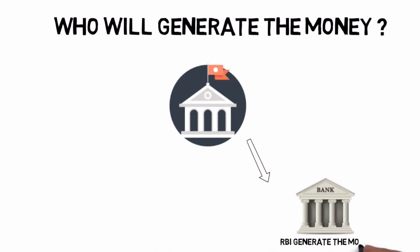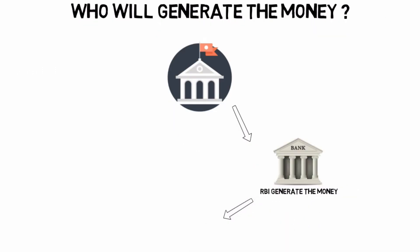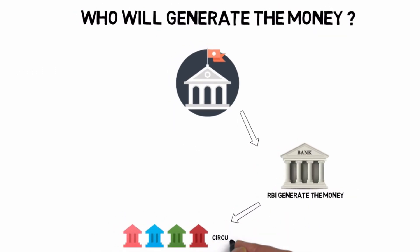We will have a price from the government and we will have a price from the bank. So, this is the first thing.